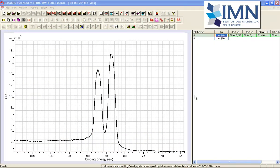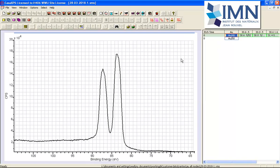These data have been measured from a Kratos Axis Nova and they've all been acquired from a gold sample using the same Pass Energy, that's Pass Energy 160.